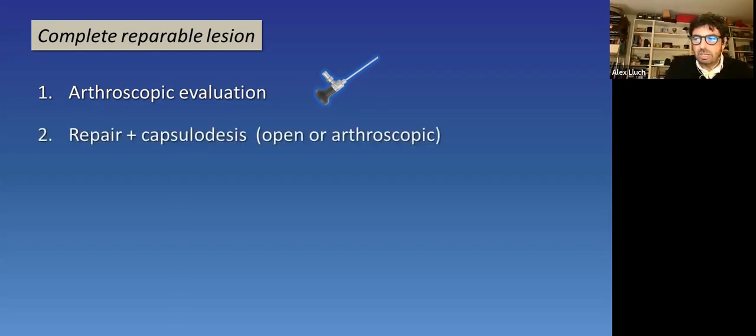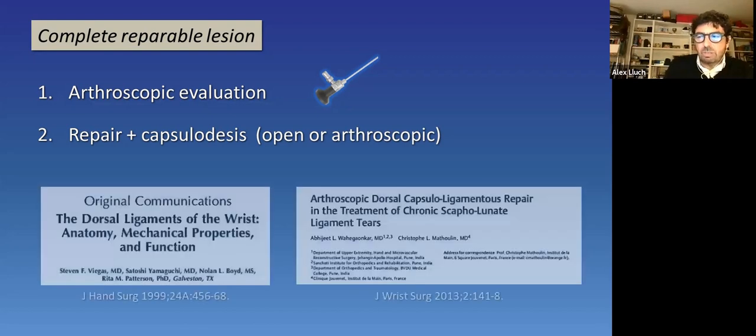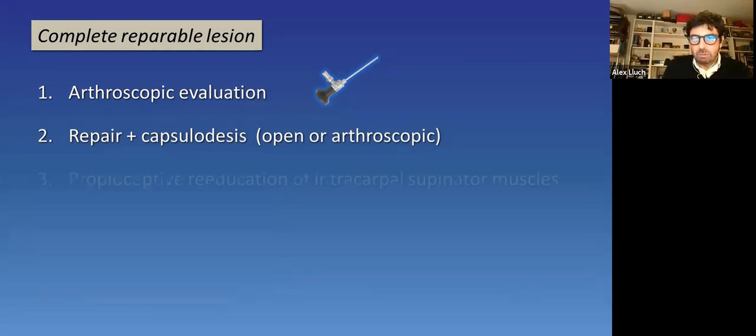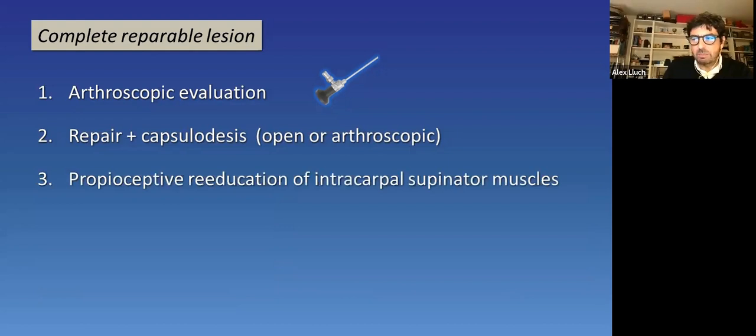Probably in this situation, we can be a little bit more aggressive and not wait too much. As the healing potential of the structures will decrease with time, an instability may develop. But always consider the type of patient we have in front. So, we would consider an arthroscopic evaluation to confirm that it's a complete lesion. If it is, try to repair it and do a dorsal capsular desis. That can be done open, as it was described many years ago by Steven Viegas, or arthroscopically, as described not so many years ago by Christoph Mathoulin. And that will be followed by a postoperative proprioceptive re-education of our interesting supinator muscles.